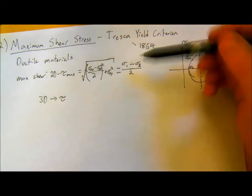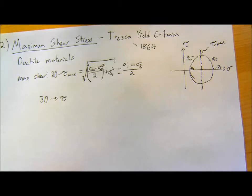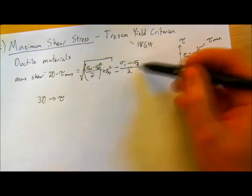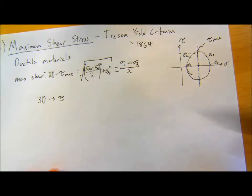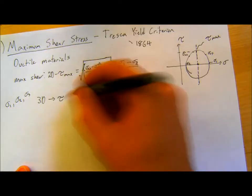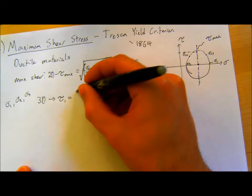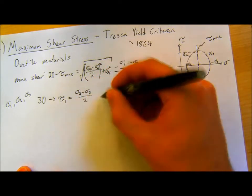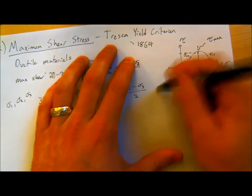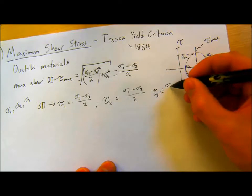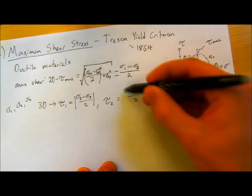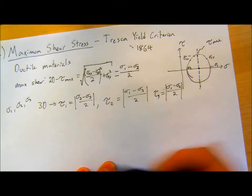Now in 3D we don't just have two principal stresses. Instead we can define principal shears as the difference between any one of our three principal stresses. We have σ1, σ2, and σ3. τ1 = |σ2 minus σ3| / 2, τ2 = |σ1 minus σ3| / 2. The magnitude of these principal shears is the absolute value of the difference between your principal stresses divided by 2.